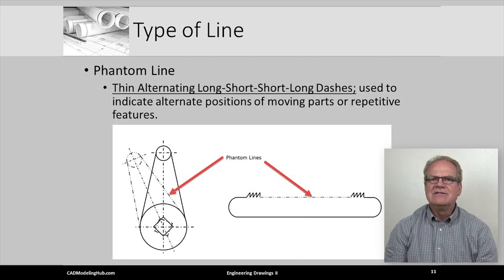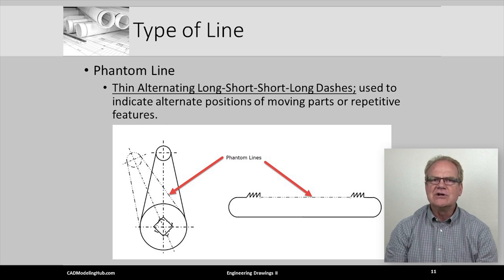The phantom line is a thin line comprised of alternating long, short, short, long dashes. Its two principal uses are illustrated in this figure. First, look at the left object. Notice how the outline of the object has been copied and rotated to its alternate position, and all visible object lines of this copy were replaced with thin phantom lines. Next, look at the right or hacksaw looking object. Notice how many of the teeth of the blade have been replaced with a phantom line. So, in summary, phantom lines show alternate positions or indicate a repeated but not drawn set of features.